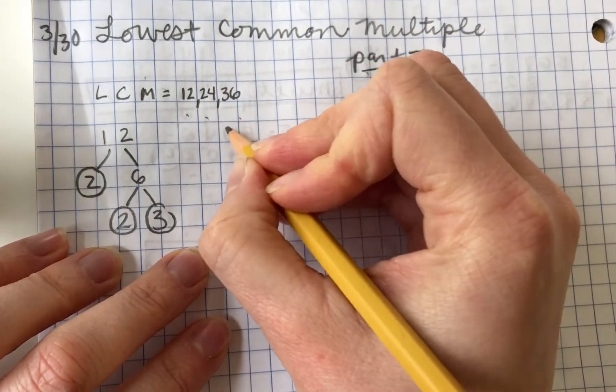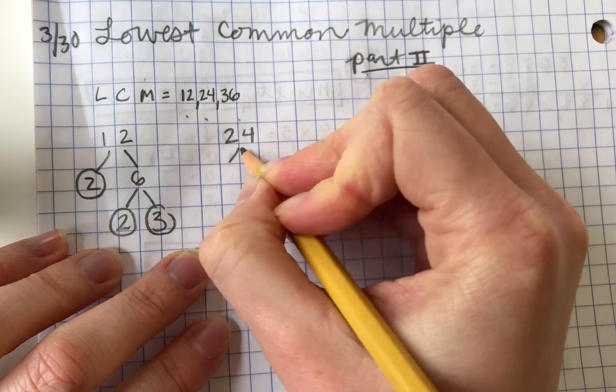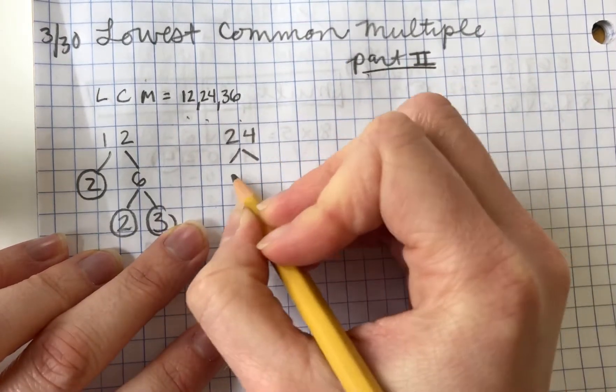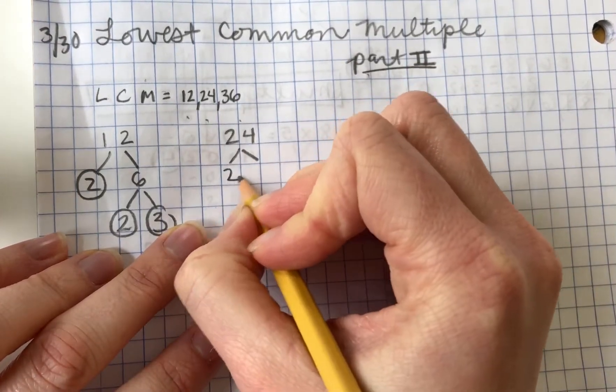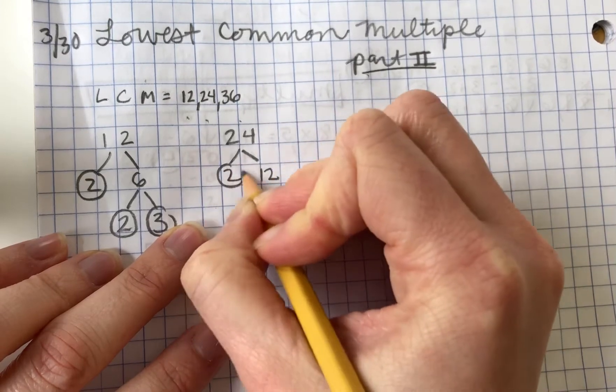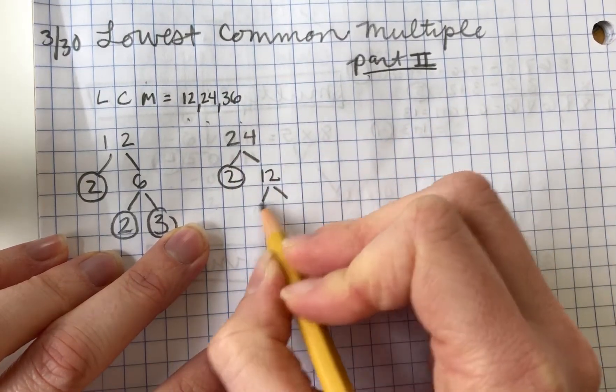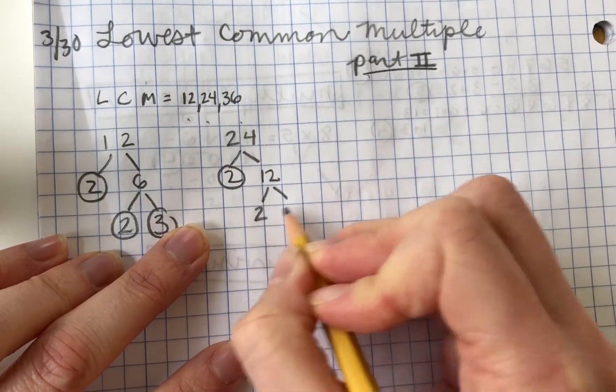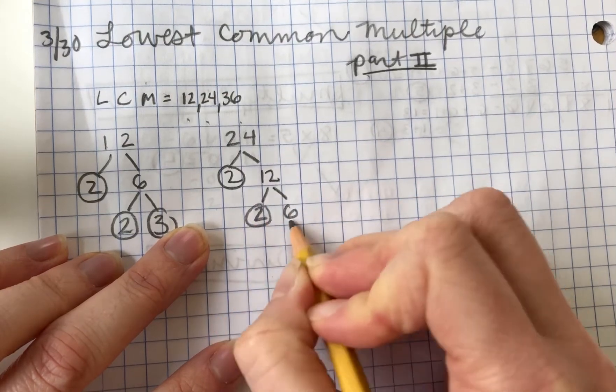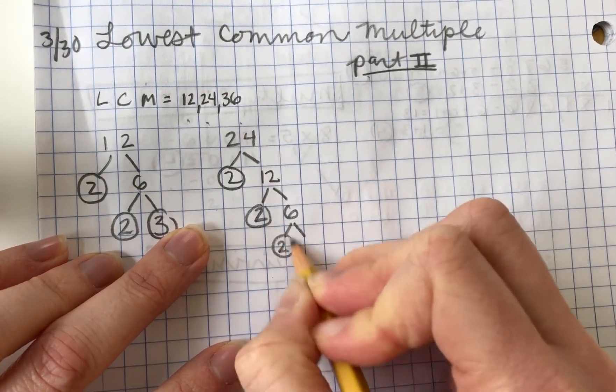Now we'll do 24. That's actually the problem we did in the video lesson. So 24 becomes 2 and 12. 2 is a prime number. 12, we end up with 6. 6 breaks down to 2 times 3.